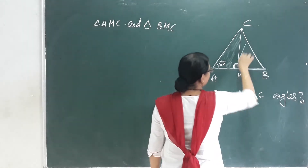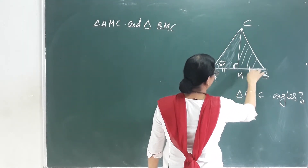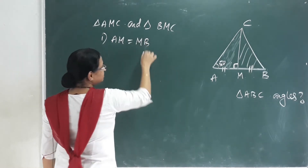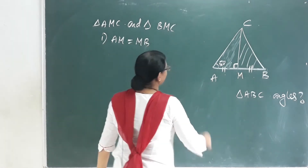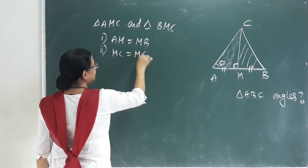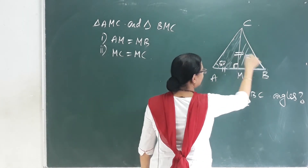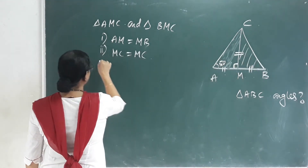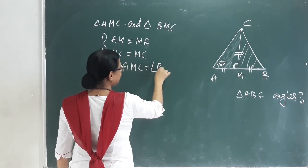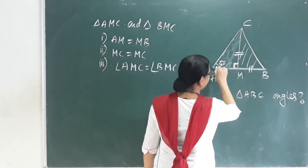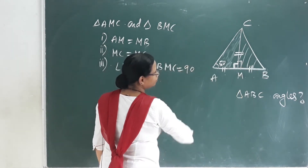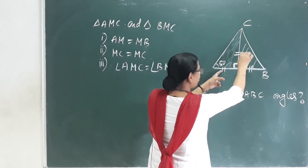These two triangles are considered congruent. AM equals MB — so M is the midpoint, meaning these two lengths are equal. That is the first point. Second point: MC equals MC — these two triangles share a common side. Third point: angle AMC equals angle BMC. If you look at this, this is a straight line, so this is a 90-degree angle.